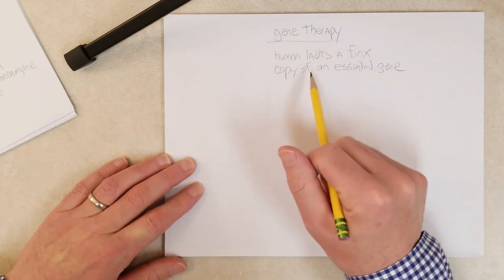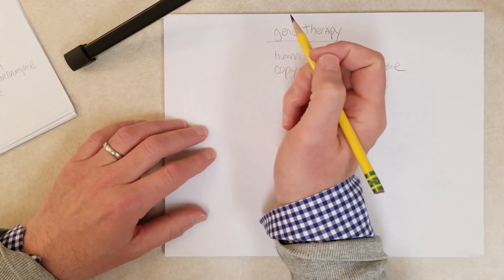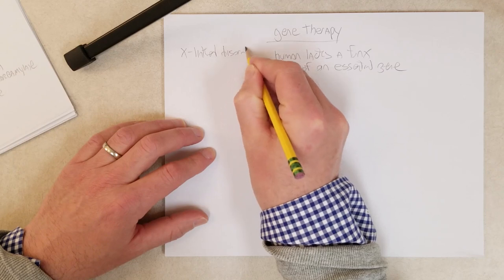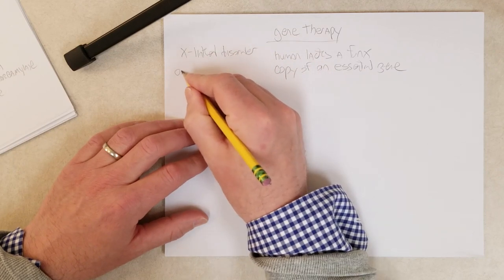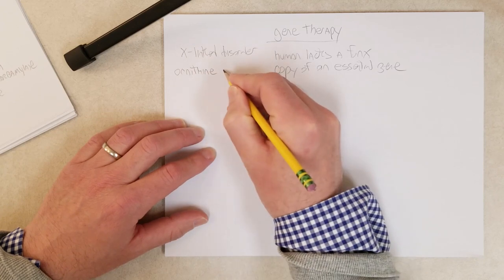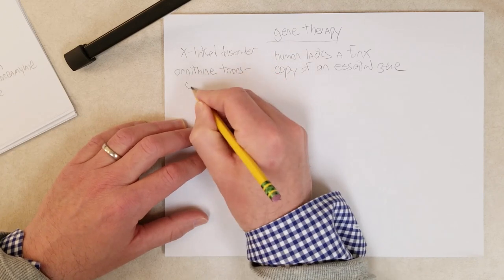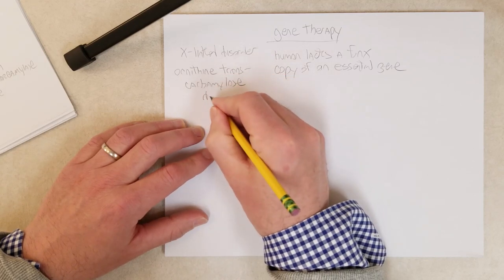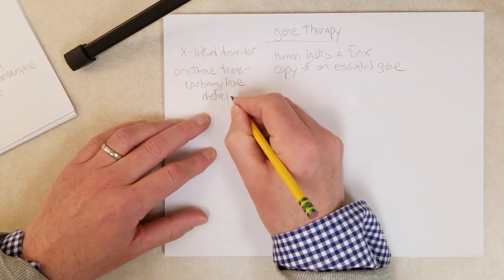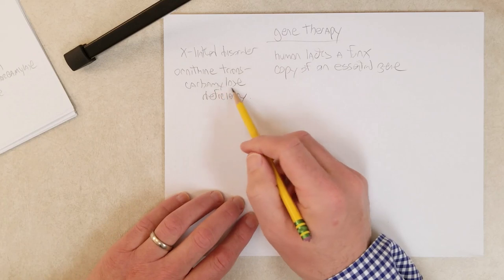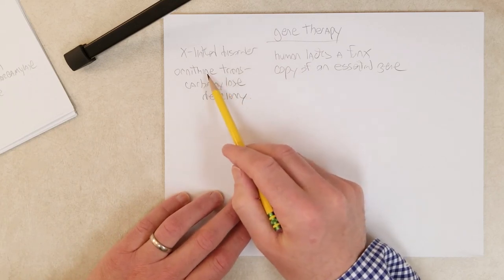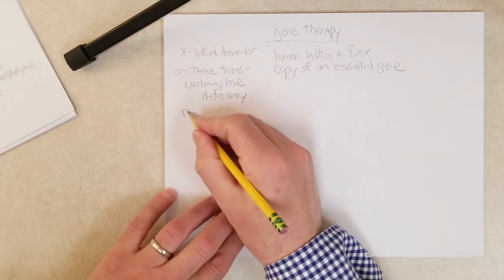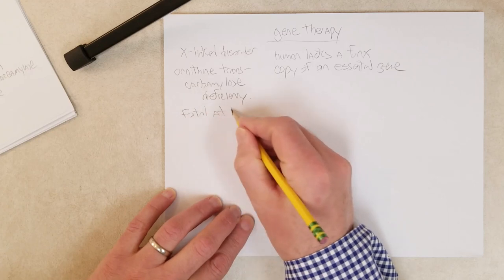An example would be an X-linked disorder called ornithine transcarbamylase deficiency. There's an X-linked disorder called ornithine transcarbamylase deficiency, which is caused by a mutation in the ornithine transcarbamylase gene. This disease is fatal at birth.